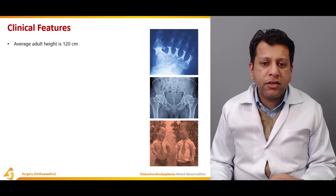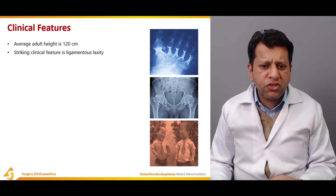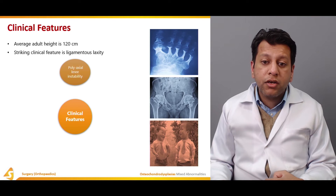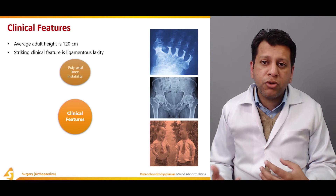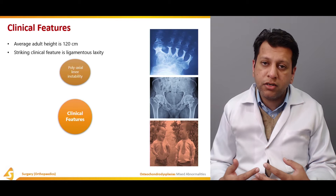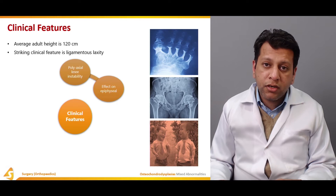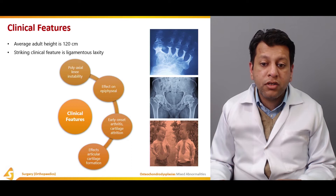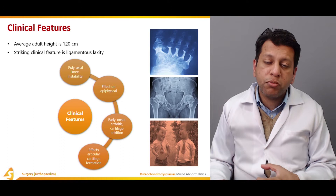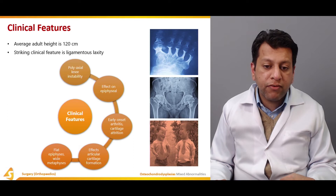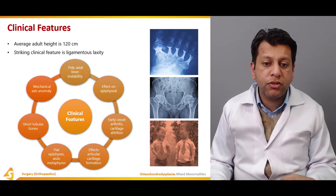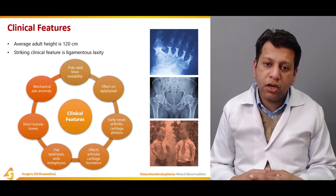Clinical features include an average height of around 120 cm, which is about 4 to 4.5 feet. A striking clinical feature is ligamentous laxity, diagnosed with Beighton scoring. There is polyaxial instability — the knee may show posterolateral and anterolateral instability or rotary instability. Early onset of arthritis and cartilage attrition affects articular cartilage formation. Flat epiphyses with mild metaphyseal changes are usually seen on X-rays, with short tubular bones, and there may be associated mechanical axis anomalies due to bone weakness.